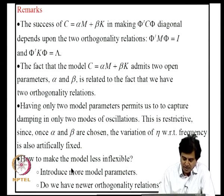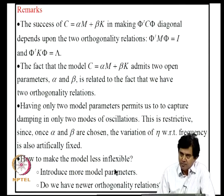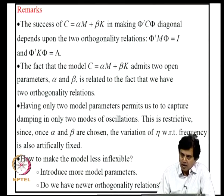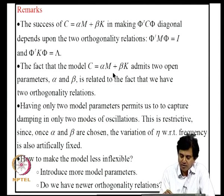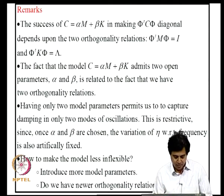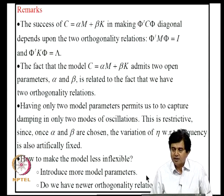To make the model more flexible, we introduce more model parameters. Instead of just alpha and beta, we introduce alpha_1, alpha_2, ..., alpha_N and beta_1, beta_2, ..., beta_N. The question is how to select them such that Phi-transpose·C·Phi remains diagonal. This leads to the question: do we have additional orthogonality relations beyond the two we are already using, or are those the only two?